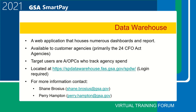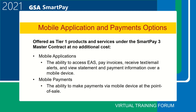I'd like to take a moment to mention the two mobile tools offered as Tier 1 products and services under the GSA SmartPay 3 Master Contract at no additional cost. First, mobile applications provide the ability to access EAS, pay invoices, receive text or email alerts, and view statements and payment information. Second, mobile payments allow the user the ability to make secure payments using a mobile device at the point of sale. If you are interested in mobile solutions, contact your GSA SmartPay contractor bank for additional information on specific offerings outlined in your task order.